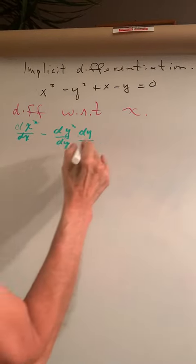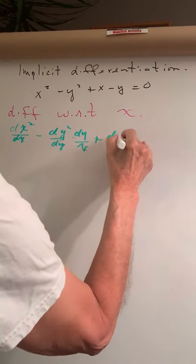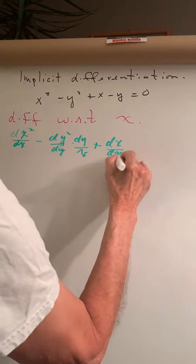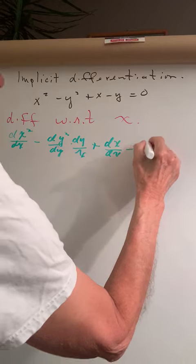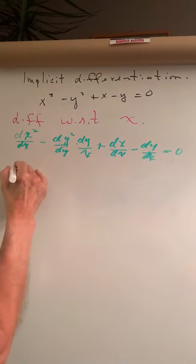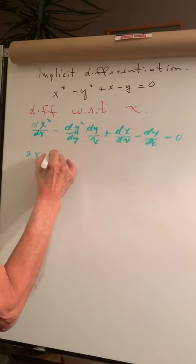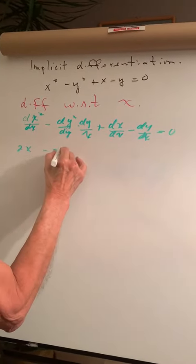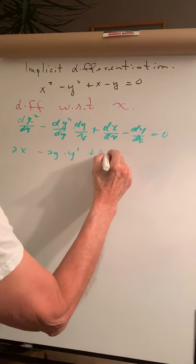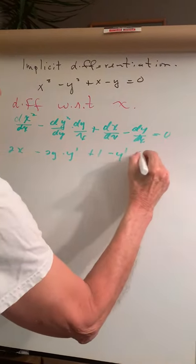...it looks like this: plus the derivative of x with respect to x, which becomes 1, plus dy/dx, and that equals 0. This becomes 2x, this becomes 2y·y' + 1 - y' = 0.